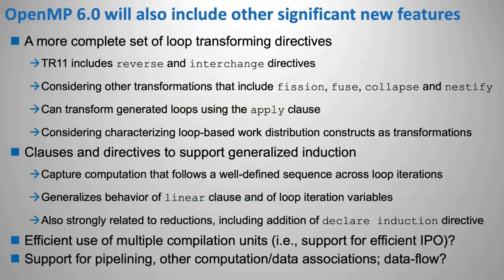We've added in TR11 something called the apply clause, which allows you to specify a loop transforming directive and then apply other loop transforming directives to the resulting loops from the first transformation. In the long run, what we'd like to do is take things like the work-sharing loop and the distribute construct and characterize those as transformations, which will then allow us to specify applying them to the results of loop transforming directives, or to specify applying other loop transforming directives to the distributed work from those parallel loop directives.